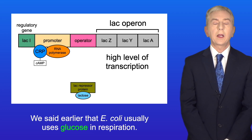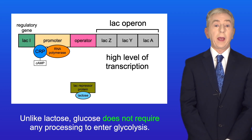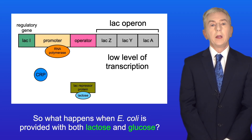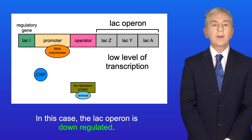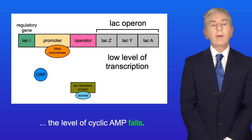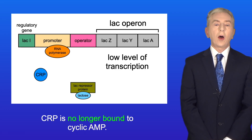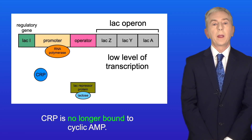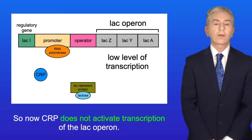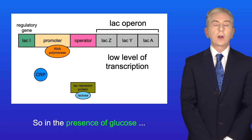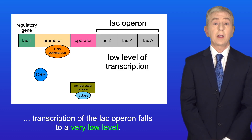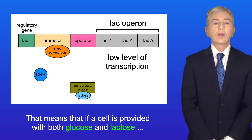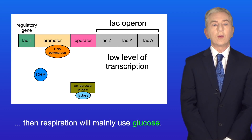E. coli usually uses glucose in respiration. Unlike lactose, glucose does not require any processing to enter glycolysis. So what happens when E. coli is provided with both lactose and glucose? In this case the lac operon is down-regulated. When glucose is transported into the cell, the level of cyclic AMP falls, so CRP is no longer bound to cyclic AMP and does not activate transcription of the lac operon. In the presence of glucose, transcription of the lac operon falls to a very low level, meaning that if the cell is provided with both glucose and lactose, respiration will mainly use glucose.